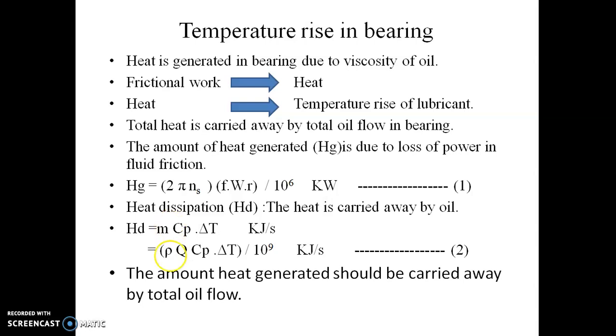Heat dissipation Hd is given by m cp ΔT × 10⁶ kJ/s, where m is the mass of lubricating oil, cp is the specific heat of lubricating oil in kJ/(kg·°C), ΔT is the change in temperature in °C (equation 2). Mass is equal to ρ × q, where ρ is the mass density of lubricating oil in kg/m³ and q is the total flow rate in m³/s. So the amount of heat generated should be carried by total oil flow.